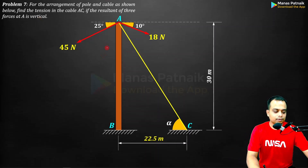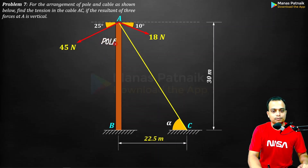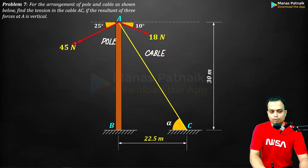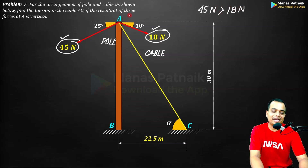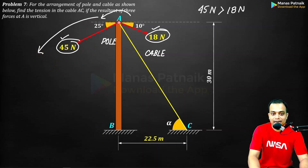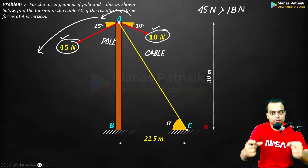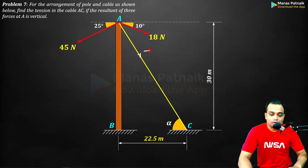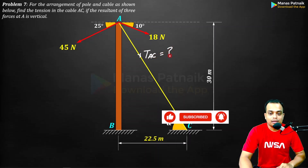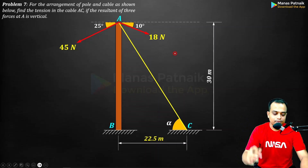Here we have a pole, and this is the cable giving the pole support. There are two forces acting at end A: one is 45 newtons while the other is 80 newtons. Since 45 newtons is more than double 80 newtons, the pole may tend to fall down. To prevent this, a cable is attached at end A and fixed to the ground, so tension develops inside it — and it is this tension along cable AC that we will work out.